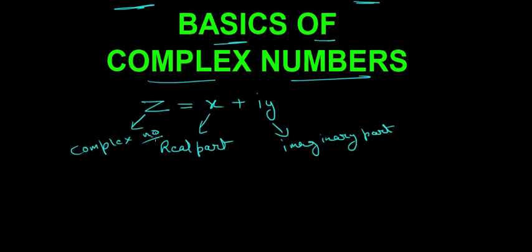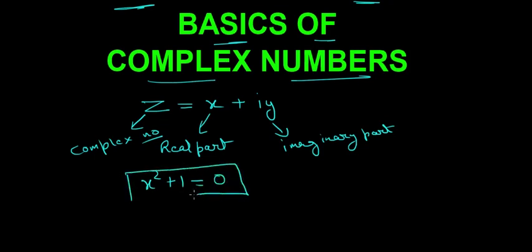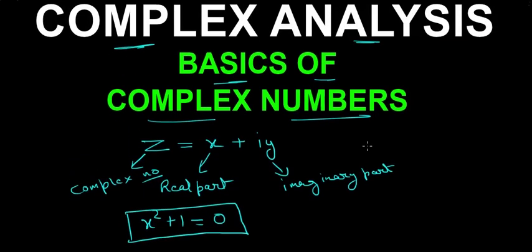So now we will ask: from where did these complex numbers come? Take a look at this equation: x squared plus 1 is equal to 0. This one equation is responsible for the whole of complex analysis.